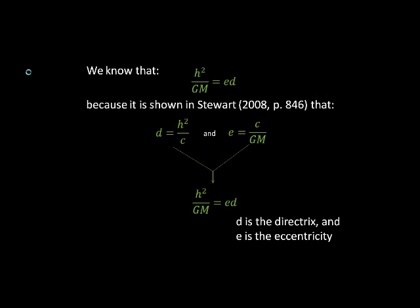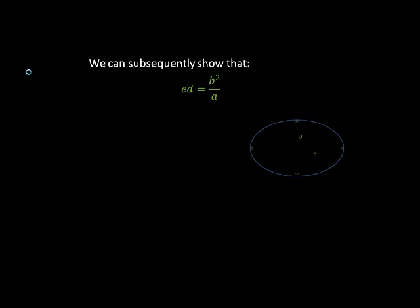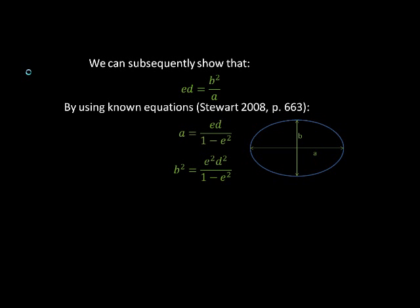Just to clarify, d is the directrix, which is a line used to measure ellipses, parabolas, and hyperbolas, and e is the eccentricity of the ellipse. We can subsequently show that ED is equal to b squared over a, where b and a are the semi-minor and semi-major axis, respectively, as depicted here. By using certain known equations, again from Stuart's calculus book, we can show that this equation is true and move forward with our proof.